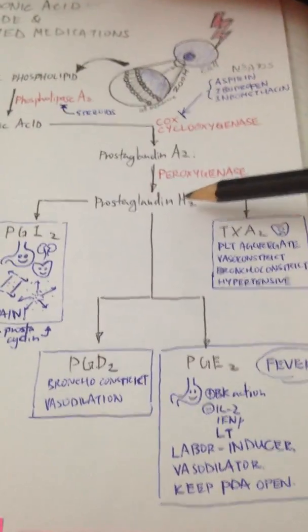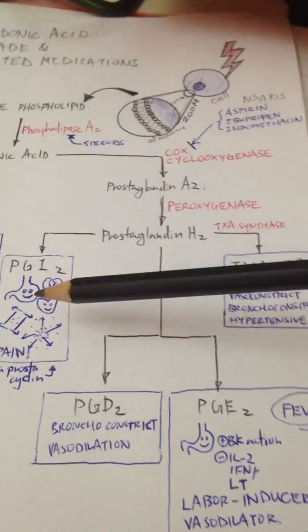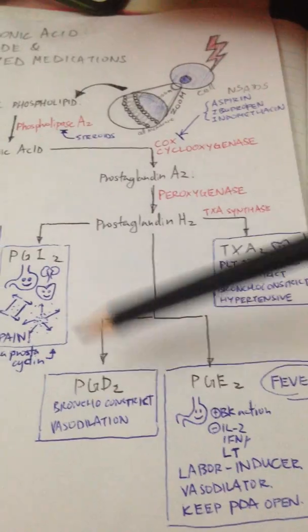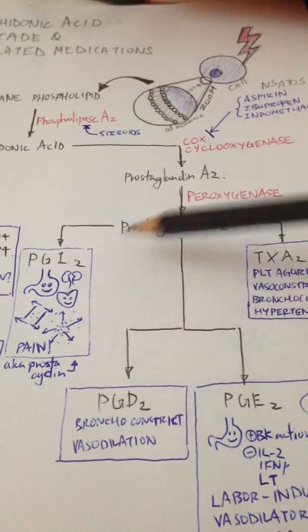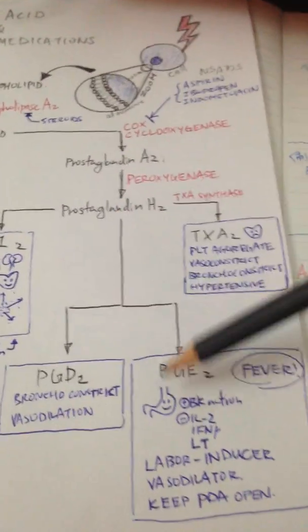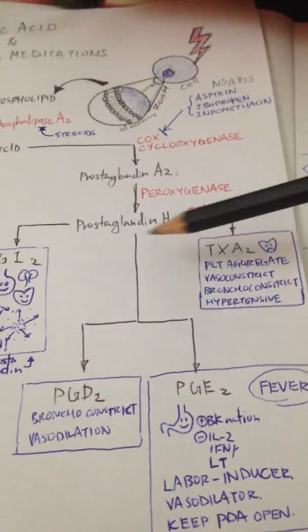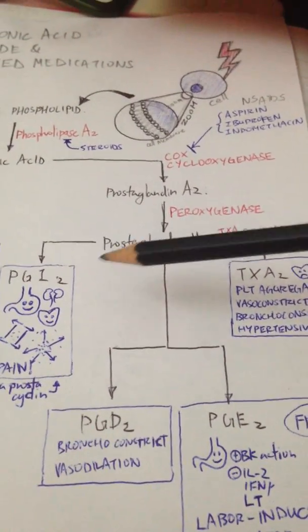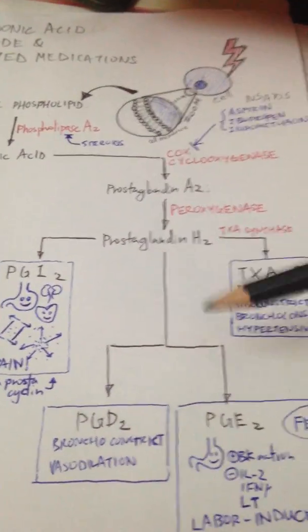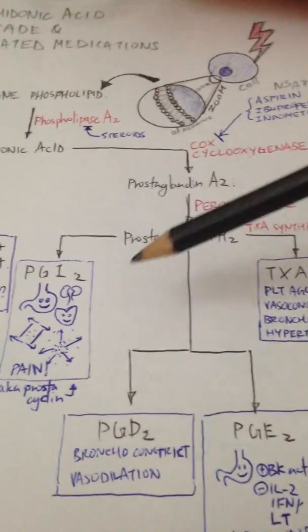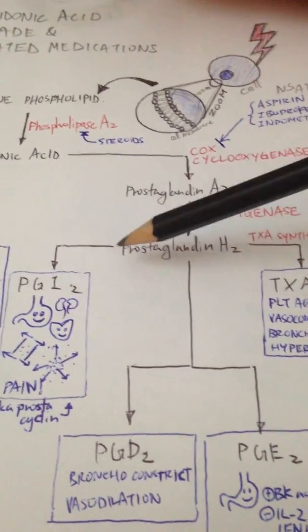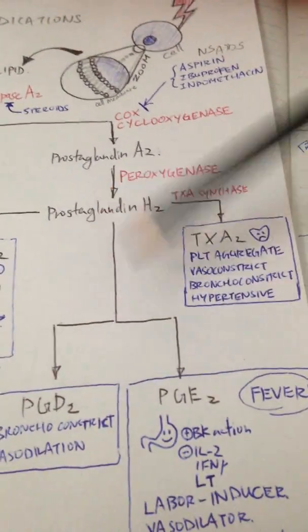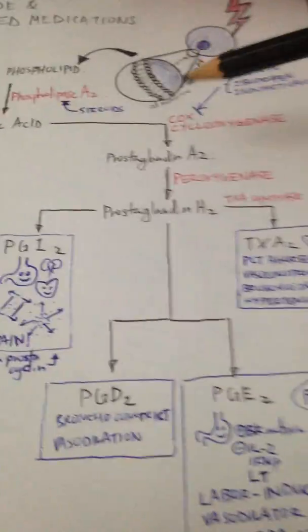From prostaglandin H2, it can be going to any of four things, and the speed at which they go to each product differs according to the situation as well as the location. Each organ has a different amount of different types of enzymes that will catalyze these reactions.